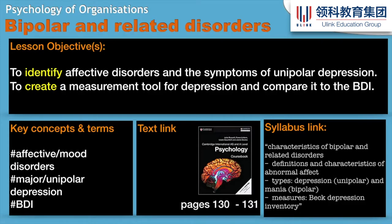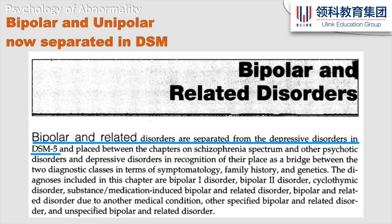The word depression is used nowadays in casual conversation quite often, so it's important that we distinguish between depression colloquially and professionally. We could call it unipolar depression to differentiate it from bipolar, or we can call it major or severe depression. Any disorder or condition that affects your mood and your expression of mood is often called an affective disorder. These used to be pooled together — bipolar and unipolar — in one place, but now in the DSM-5 these disorders are separated into separate chapters.